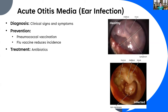Prevention: the pneumococcal vaccine can help your body become resistant to Streptococcus pneumoniae, providing some benefit in preventing ear infections. The flu vaccine also helps reduce the incidence of ear infections, since this is often a secondary infection. Getting the flu vaccine reduces your risk of developing the flu, or reduces its severity — meaning less congestion and less ability for bacteria to get where it doesn't need to go.